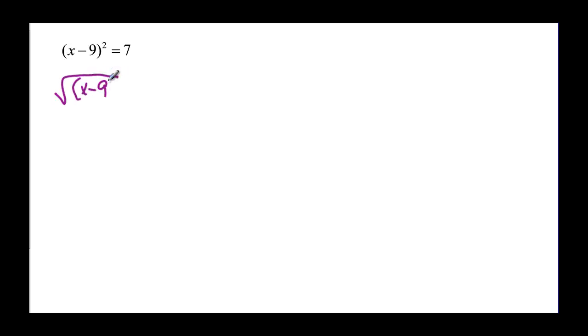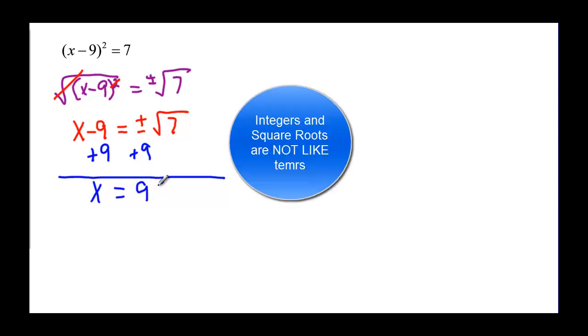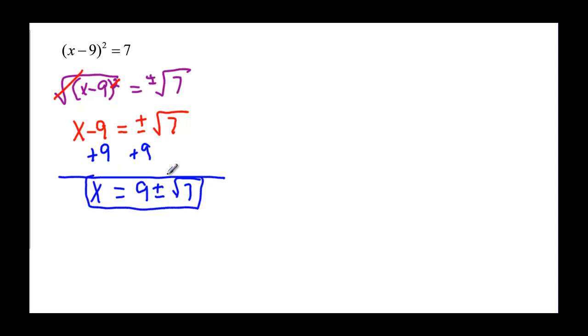So when we have something like this — something squared all by itself equal to 7 or a constant — I can take the square root of the something, as long as it doesn't have a coefficient on it. Anything squared gives plus or minus the square root of 7. The square cancels the square root, leaving x minus 9 equal to plus or minus the square root of 7. Now I add 9 to both sides to isolate x. Since the square root of 7 and 9 can't be combined, x equals 9 plus or minus the square root of 7.